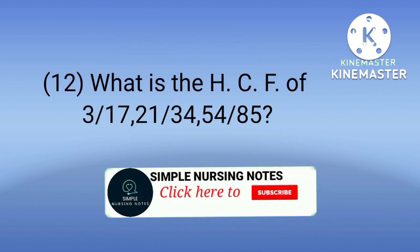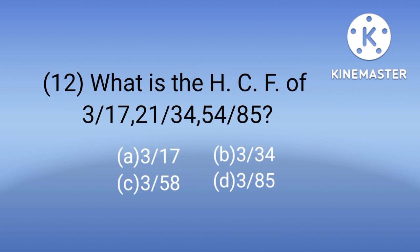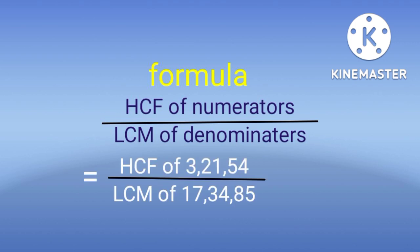Number 12: What is the HCF of 3 by 17, 21 by 34, and 54 by 85? These are the options. Let's find the answer. The formula for finding HCF is: HCF of numerators divided by LCM of denominators. So let's find the HCF of numerators and LCM of denominators.